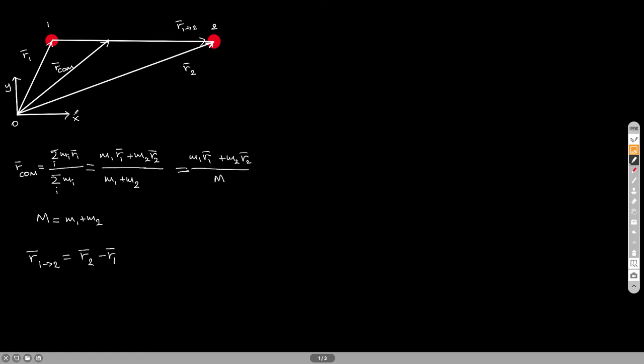What I have here is the coordinate system, I have the origin, x, y, I have one object and I have object 2, and I have drawn a few vectors. R1 is the position vector of object 1, the tail is at the origin, the tip is at object 1.